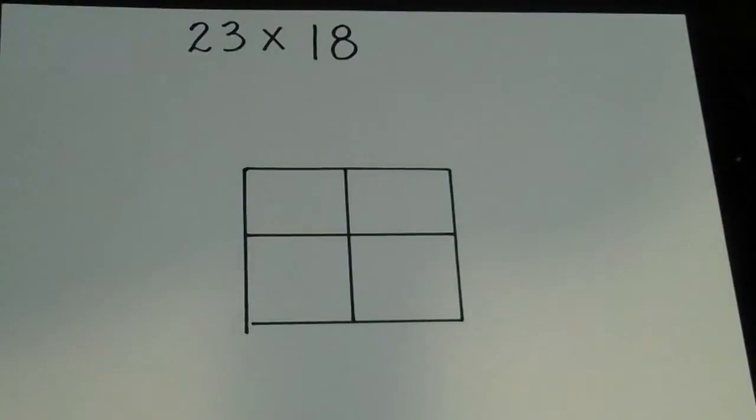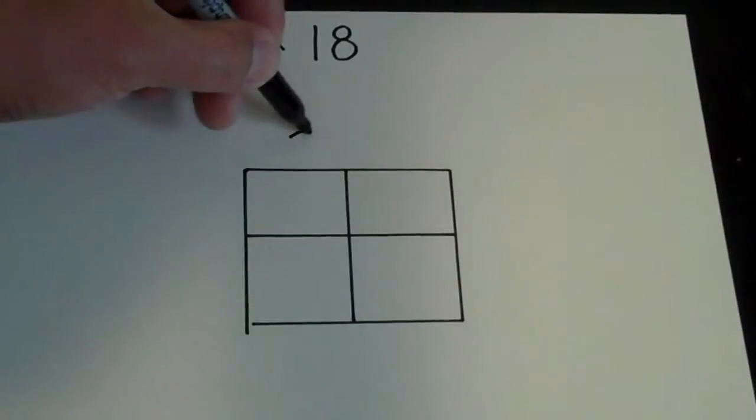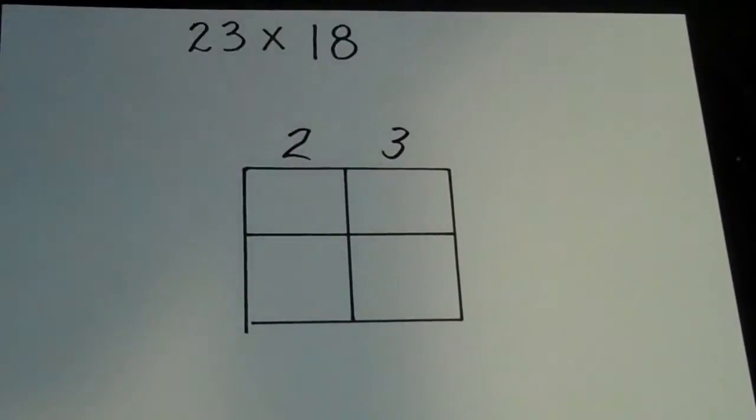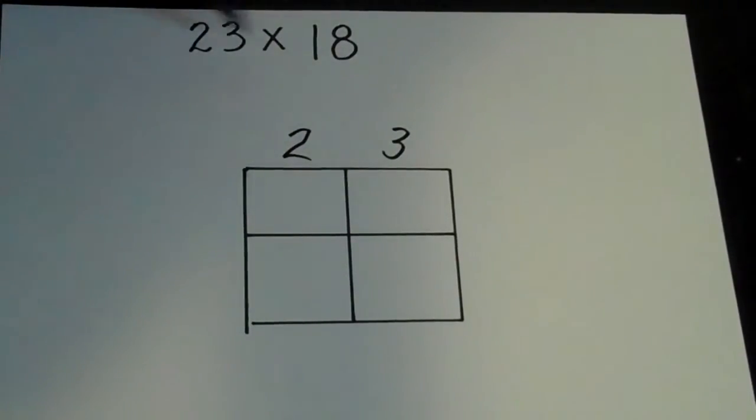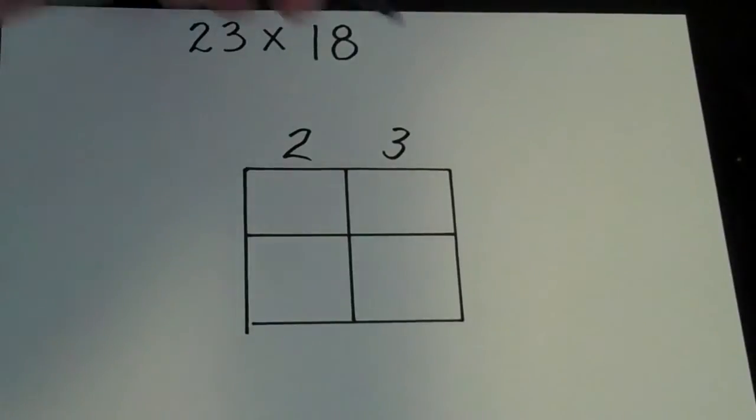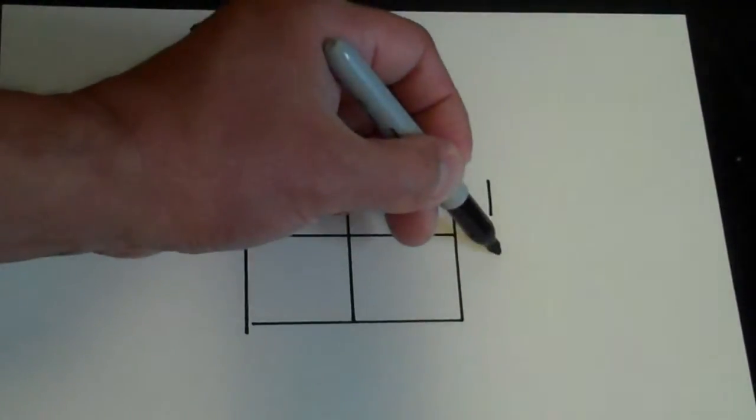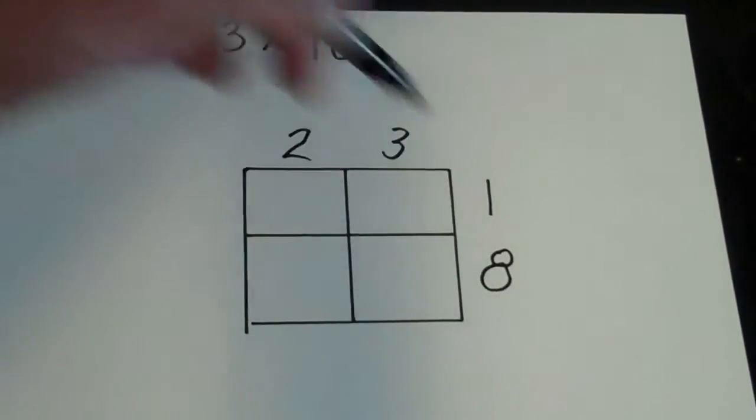So here's how I would set up this problem. I'll put the 23, the 2 and 3, so I'll put one number at the top and I'll put another number on the side, so the 18 would be right here.